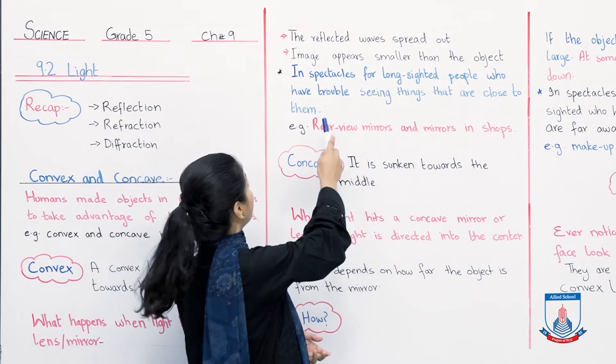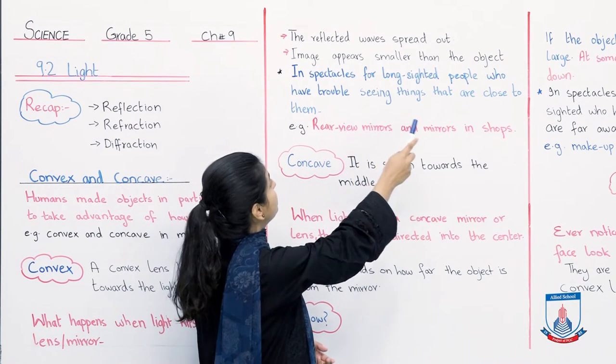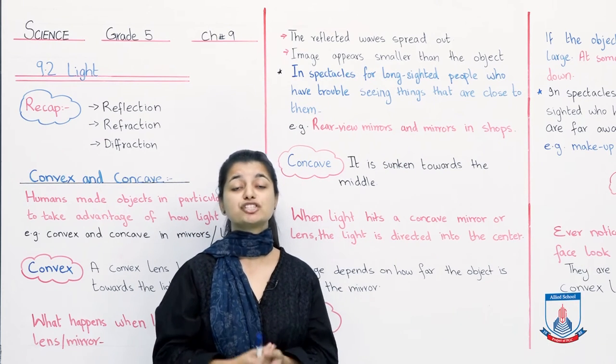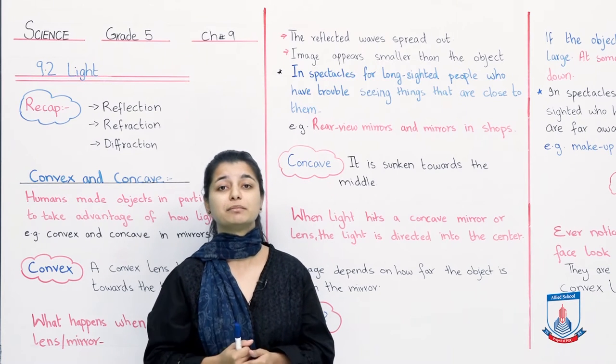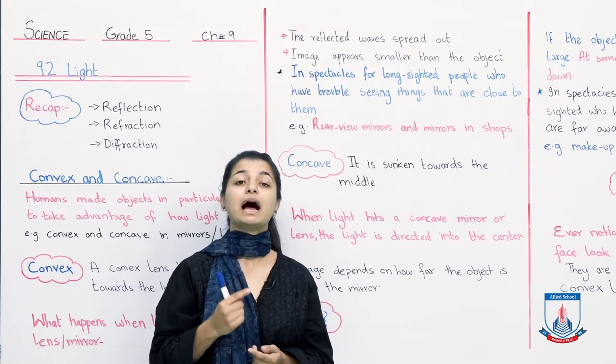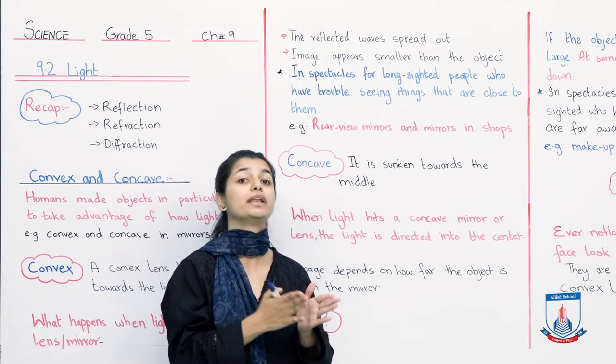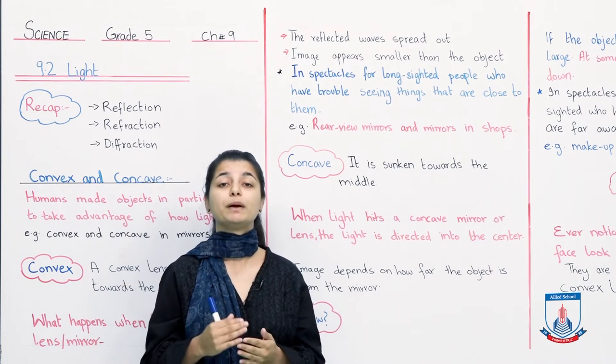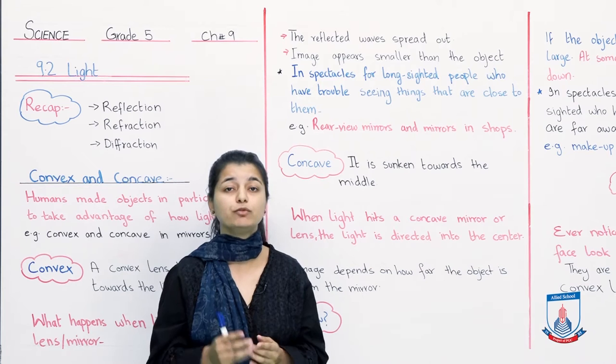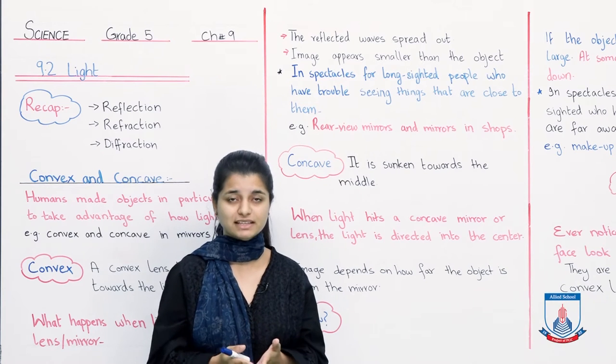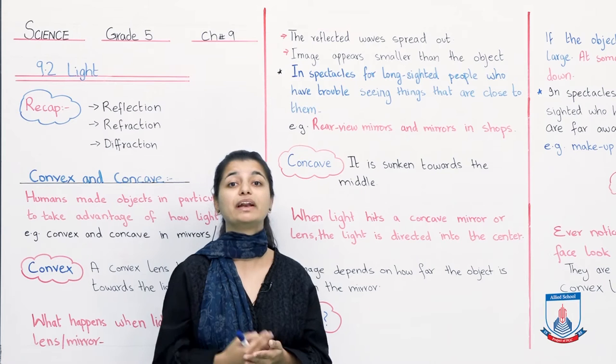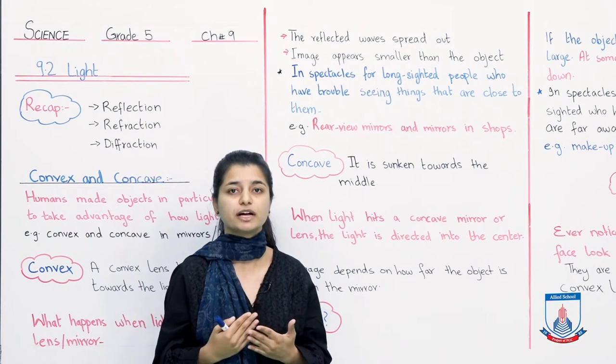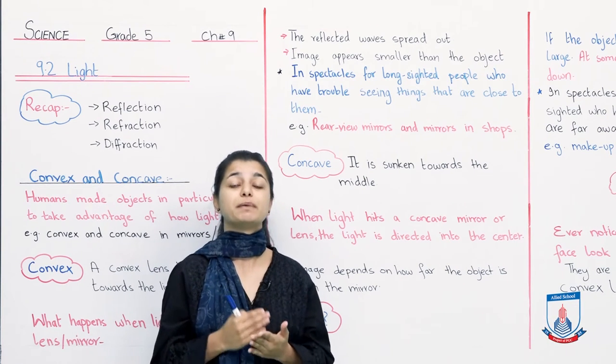So what's the use of convex lens? In spectacles for long-sighted people who have trouble seeing things that are close to them. Spectacles are your regular glasses, your chashme that you use. And these lenses are used in them. If you have long-sighted vision, meaning your distant vision is fine but your near vision is weak, convex lenses are placed in your glasses. So convex lenses are used in spectacles.